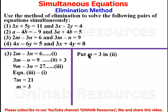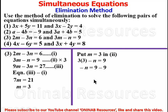We substitute m equal to 3 in equation 2. So we have 3 times 3 minus n equal to 9. That gives 9 minus n equal to 9. Moving 9 to the right-hand side: negative n equals 9 minus 9, so n equal to 0. In coordinate form we have (3, 0) — m is 3 and n is 0. We are done with problem 3.